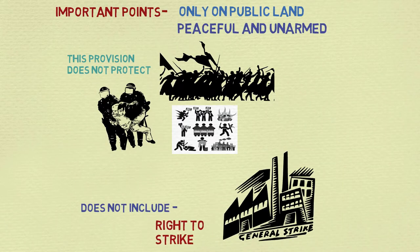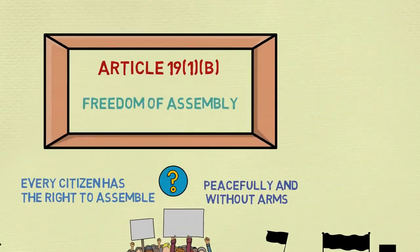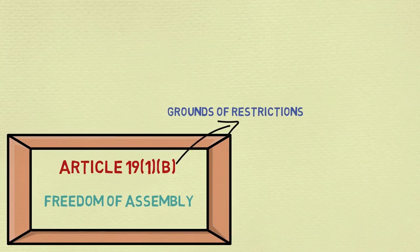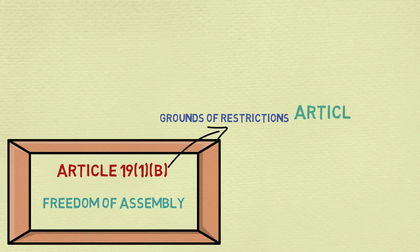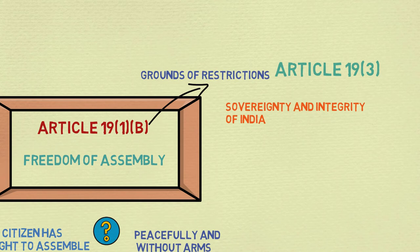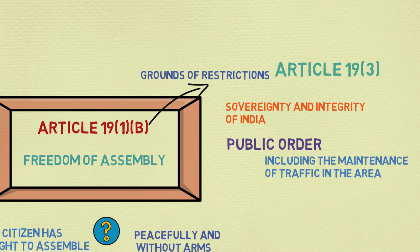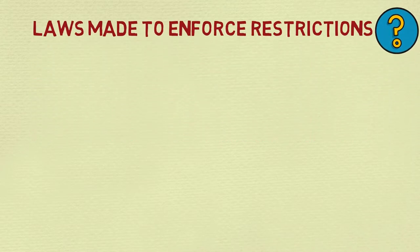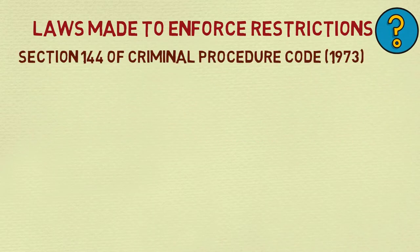Also, this right does not include the right to strike. Now, the grounds of restrictions on this right — according to Article 19, clause 3, there are two grounds for imposing reasonable restrictions: sovereignty and integrity of India, and public order, including the maintenance of traffic in the area concerned.